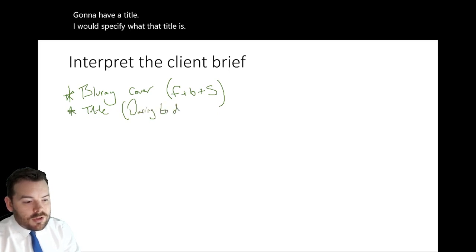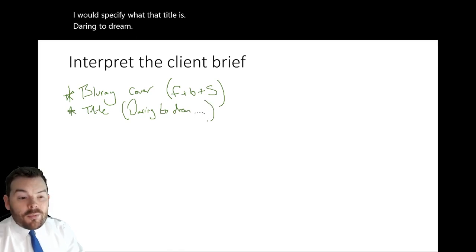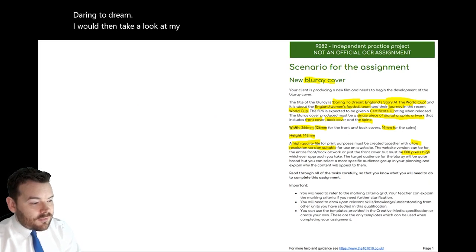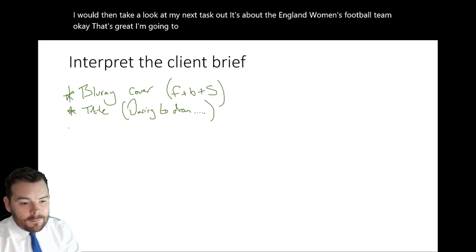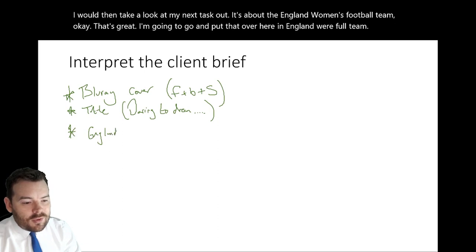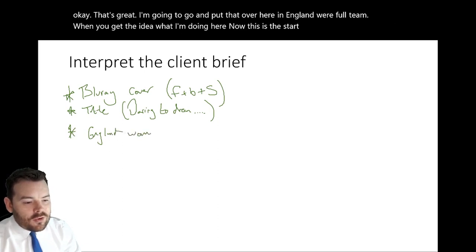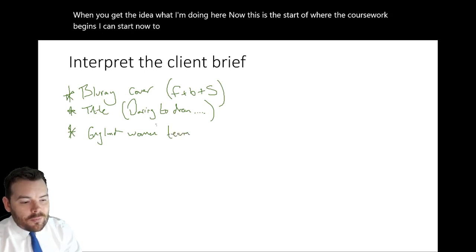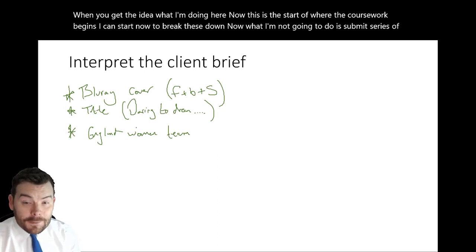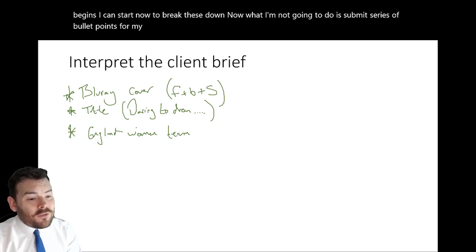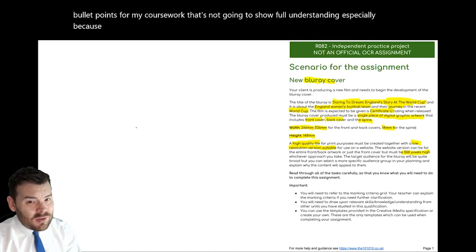I would specify what that title is — Daring to Dream. I would then look at my next point: it's about the England women's football team. Now this is the start of where the coursework begins — I can start to break these down. What I'm not going to do is submit a series of bullet points for my coursework, because that's not going to show full understanding — all I've written is simply what's on the page. In order to interpret the client brief, I'm going to need to start putting my initial ideas on top of these.